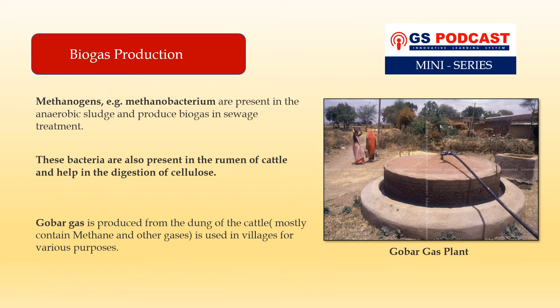Methanogens, for example Methanobacterium, which are present in the anaerobic sludge, produce biogas during sewage treatment. The same bacteria are also present in the rumen of cattle and help in the digestion of cellulose. These bacteria help in the production of biogas, which mostly contains methane and other gases. It can be used in villages for water heating, room heating, and is commonly used in rural areas as a cooking gas.